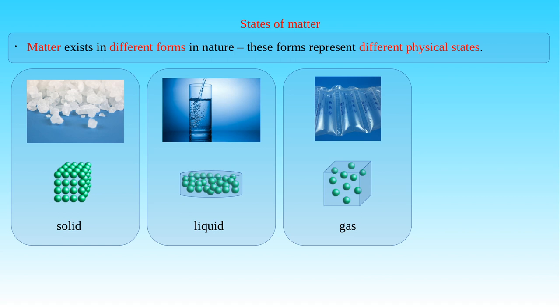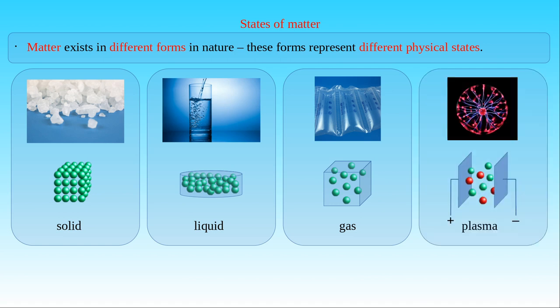The last state of matter we mention is the plasma, which can only be seen in electric discharges on Earth, as shown in the picture. However, it may be the most common state of matter in the universe, since plasma is abundant in stars or in accretion disks around black holes or compact stars. Plasma consists of highly charged particles with extremely high kinetic energy. Like a gas, plasma does not have definite shape or volume since it is formed by ions and free electrons. Therefore, plasma has electric conductivity and it can produce and interact with electromagnetic fields.